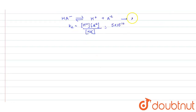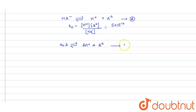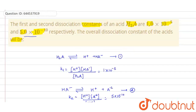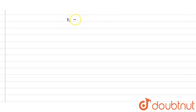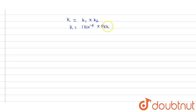Now consider equation 1 and equation 2. We need to find out the dissociation constant for the overall reaction: H₂A ⇌ 2H⁺ + A²⁻. This is equation 3. We get equation 3 by adding equation 1 and equation 2. So the overall equilibrium constant equals K1 × K2, which is 1×10⁻⁵ times 5×10⁻¹⁰.